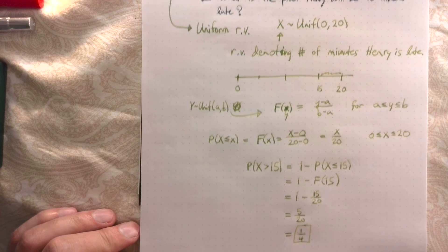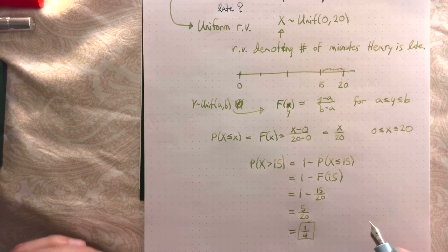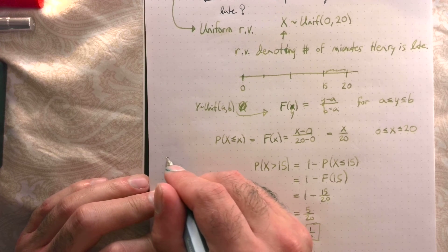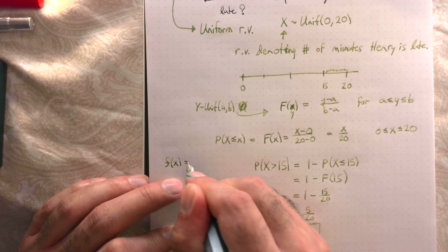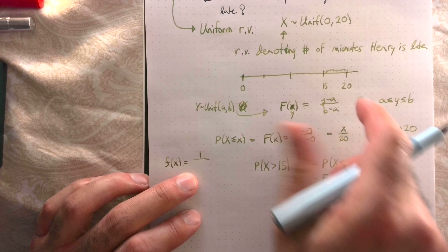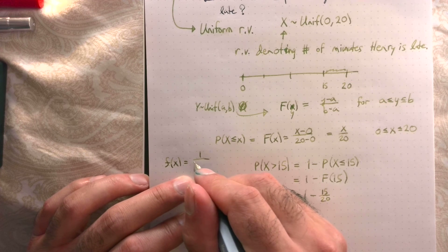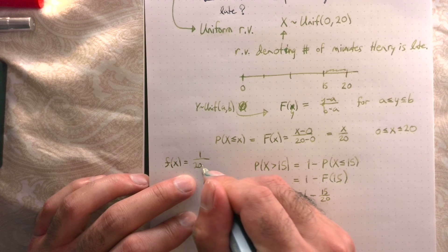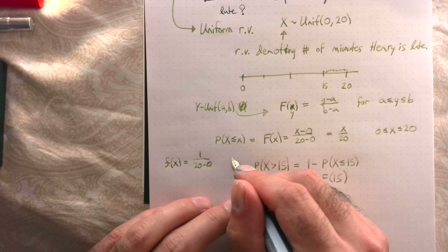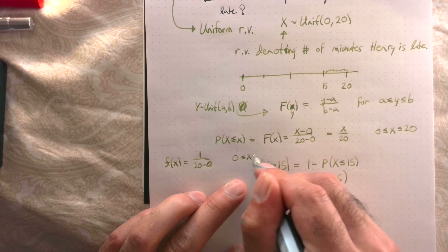That's part A. Another way to do this: the density function for a uniform random variable is f(x) = 1 / (b − a). Since we're uniform between 0 and 20, f(x) = 1/20 for x between 0 and 20.